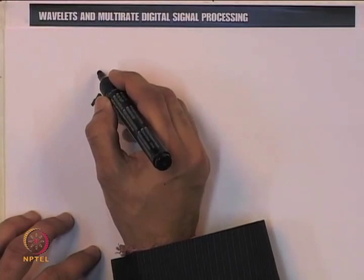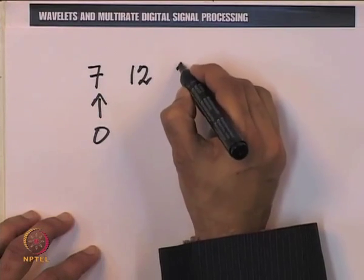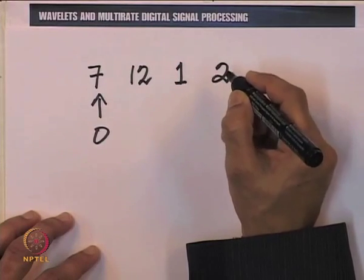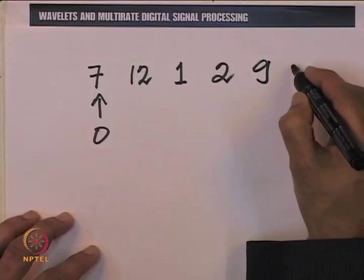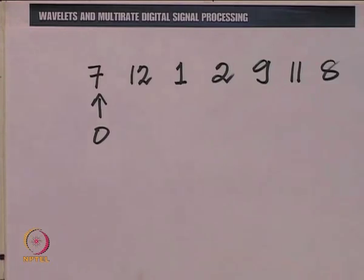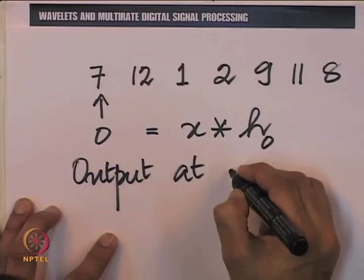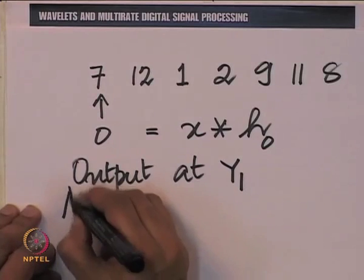So the output y1 = x convolved with h0 is the sequence {7, 12, 1, 2, 9, 11, 8}, as expected of length 7. The original sequence was of length 6, the impulse response of length 2, so the convolution output has length 6 + 2 − 1 = 7.